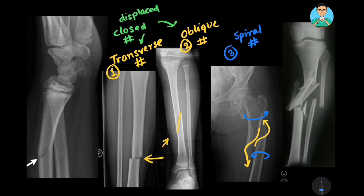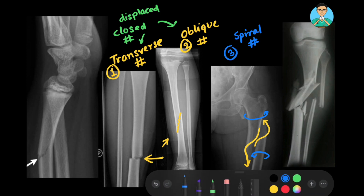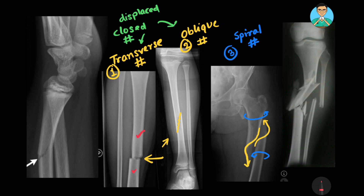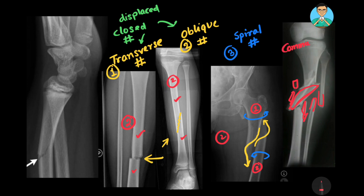In all three of those fractures — transverse, oblique, and spiral — we get two bony fragments: a proximal component and a distal component. But there can be fractures with more than two components. In this X-ray you can see the tibia has one, two, three, four, five components. The fibula shows a two-component fracture, while the tibia has multiple components.